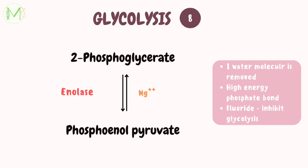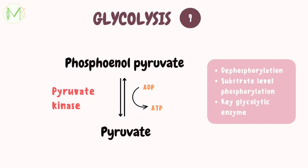Remember, enolase requires magnesium ions to work. But if fluoride is present, it will remove the magnesium ions and will irreversibly inhibit this enzyme. In step 9, phosphoenolpyruvate is dephosphorylated to pyruvate by an enzyme called pyruvate kinase, which is a key glycolytic enzyme. Here, 1 mole of ATP is generated, and this reaction is another example of substrate level phosphorylation.